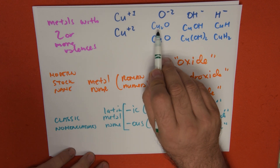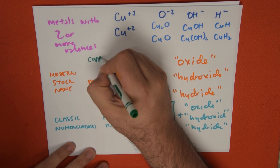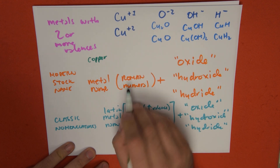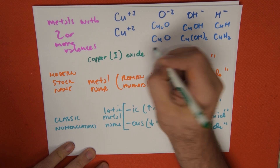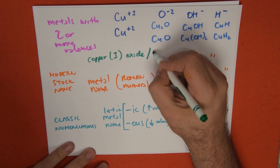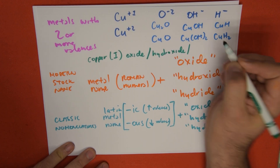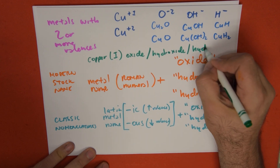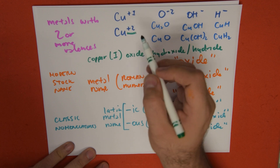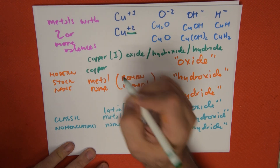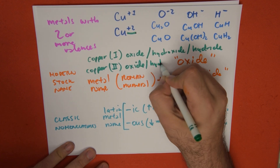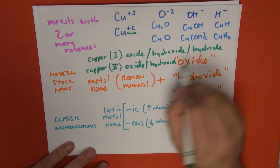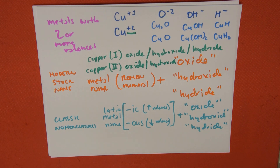For the modern name: Cu₂O is copper(I) oxide, using Roman numeral I for the plus 1 valence. Cu(OH) is copper(I) hydroxide, and CuH is copper(I) hydride. The compounds using the plus 2 valence are: CuO = copper(II) oxide, Cu(OH)₂ = copper(II) hydroxide, and CuH₂ = copper(II) hydride.